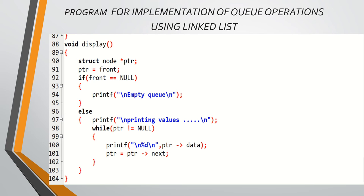Next is the display operation, which traverses all nodes in the queue. A node pointer is set to front. If front equals null, it prints 'queue is empty.' Otherwise, it prints the values while ptr is not equal to null: printf prints ptr->data, then ptr is updated to ptr->next. In this way, all nodes are displayed with their data values using the display operation.